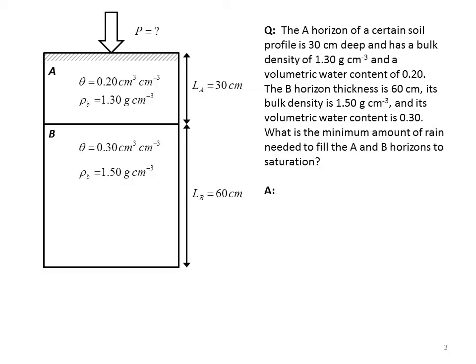In this problem, we have a soil profile with two horizons. The A horizon is 30 centimeters deep and has a bulk density of 1.3 g/cm³, indicated by the Greek letter ρ subscript B. It has a volumetric water content of 20%. The B horizon is twice as thick at 60 centimeters. It has a higher bulk density of 1.5 g/cm³ and a volumetric water content of 30%. The question is, what's the minimum amount of rain needed to fill the A and B horizons to saturation?